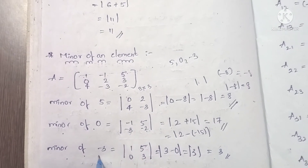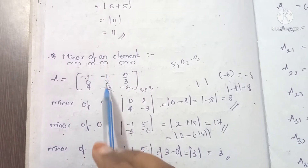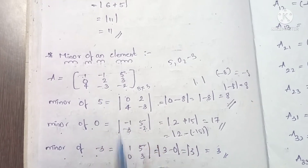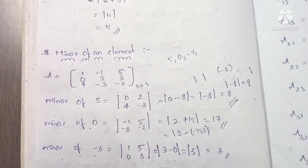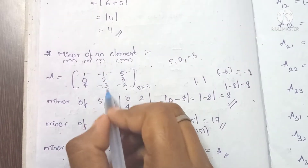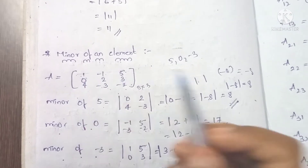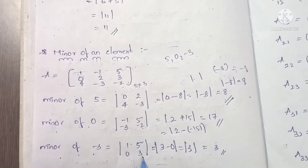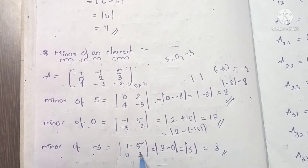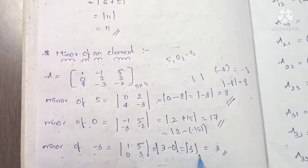Next, find the minor of the element -3. The element -3 is in row 3, column 2. Eliminating that row and column, the remaining submatrix is [1, 5; 0, 3]. The determinant is ad minus bc: 1×3 minus 5×0 equals 3 minus 0 equals 3. So the minor of -3 is 3. This concludes finding the minor of an element.